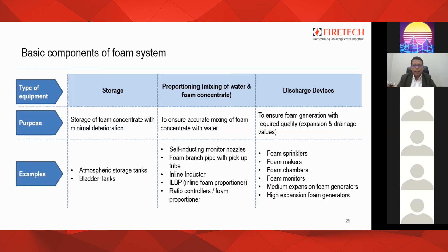The last component is discharge devices, which convert the foam solution into finished foam — the foam applied on the fuel surface. Their purpose is to ensure foam generation with the required quality, which consists of two parameters: expansion and drainage. Examples of discharge devices include foam sprinklers, foam makers, foam chambers, foam monitors, medium expansion foam generators, and high expansion foam generators.